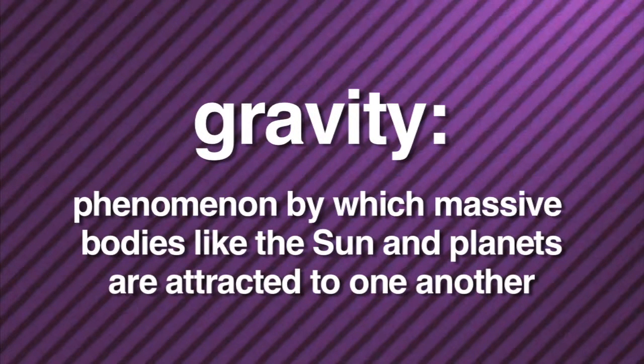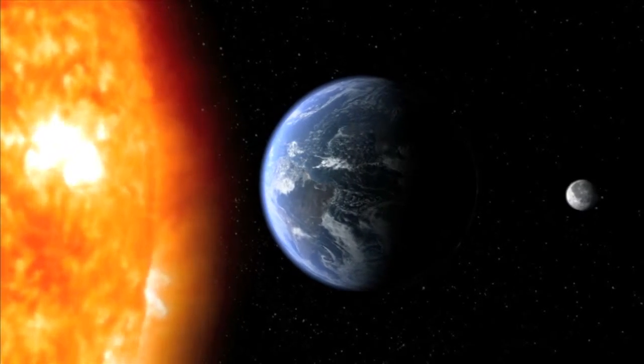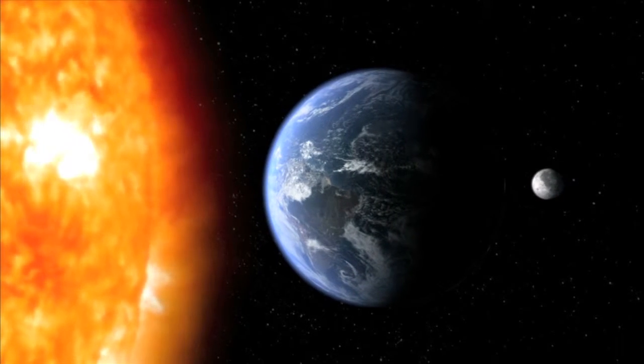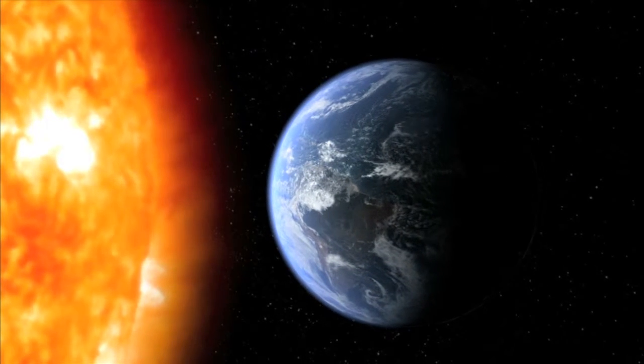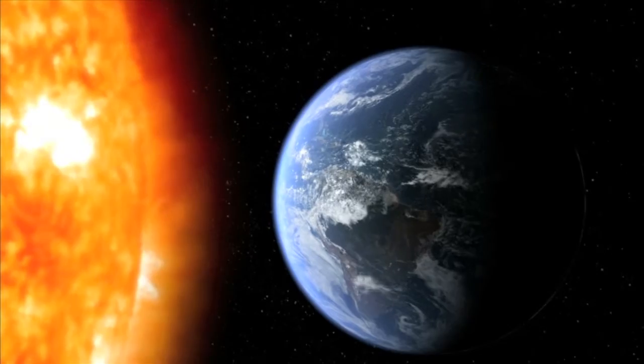Gravity is the phenomenon by which massive bodies like the Sun and planets are attracted to one another. Every object in our solar system has and is affected by gravity. This means that every object pulls at every other object. The bigger the object, the more gravity it has and the harder it pulls at the other objects. So the Sun has the most pull.